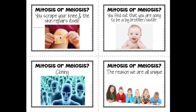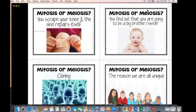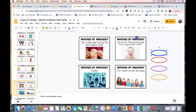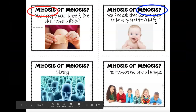You scrape your knee and the skin repairs itself — your skin cells make a copy of themselves, that's mitosis. And then you find out you're going to be a big brother or sister: you will be completely different from your sibling because of meiosis, which is the creation of egg and sperm. So that one would definitely be meiosis, and the scrape knee scenario would definitely be mitosis.